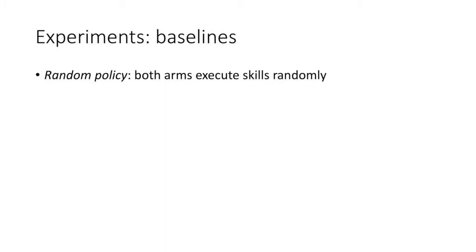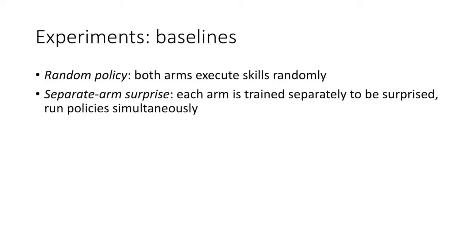We consider four baselines. A random policy with respect to a generic set of skills such as grasping, twisting, and lifting. Separate arm surprise, which trains each arm to be surprised separately and then runs the resulting policies at the same time.